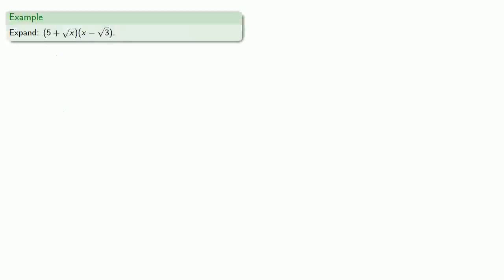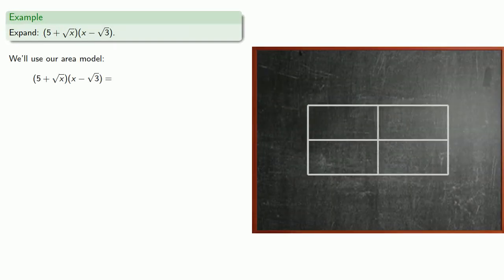For example, suppose we want to expand the product. We'll use our area model, and we'll let one side of our rectangle be 5 plus square root of x, and the other side will be x minus square root of 3.